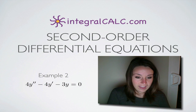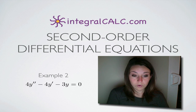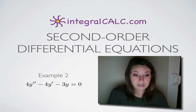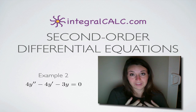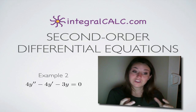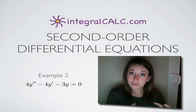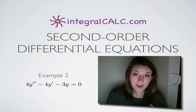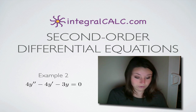The function that we're given is 4y double prime minus 4y prime minus 3y equals zero. Remember that y represents the original function, y prime is the first derivative, and y double prime is the second derivative.